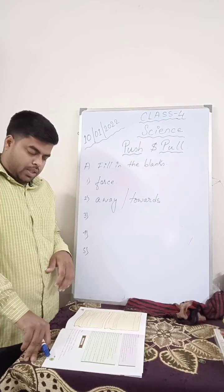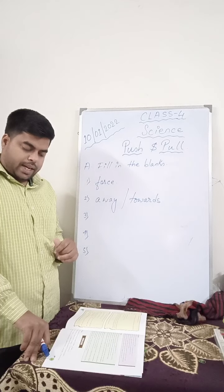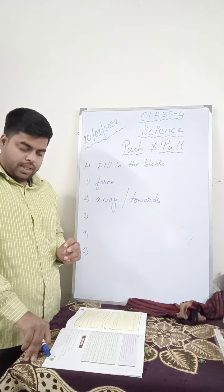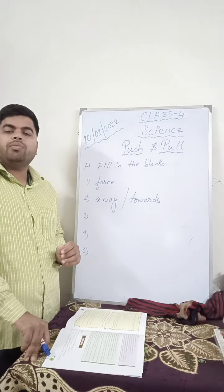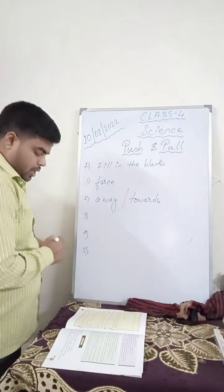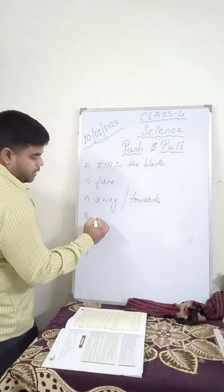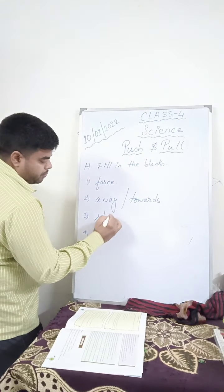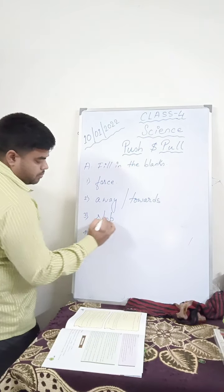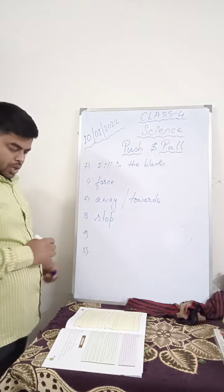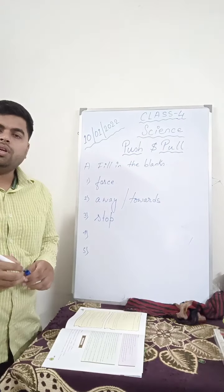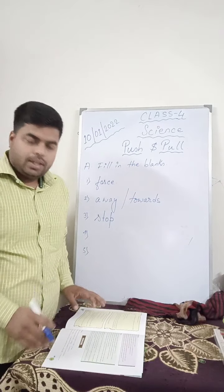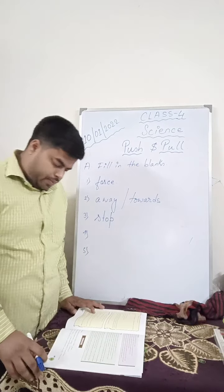Number 3. Force can dash or slow down the speed of a moving object. Force can stop or slow down any moving object.